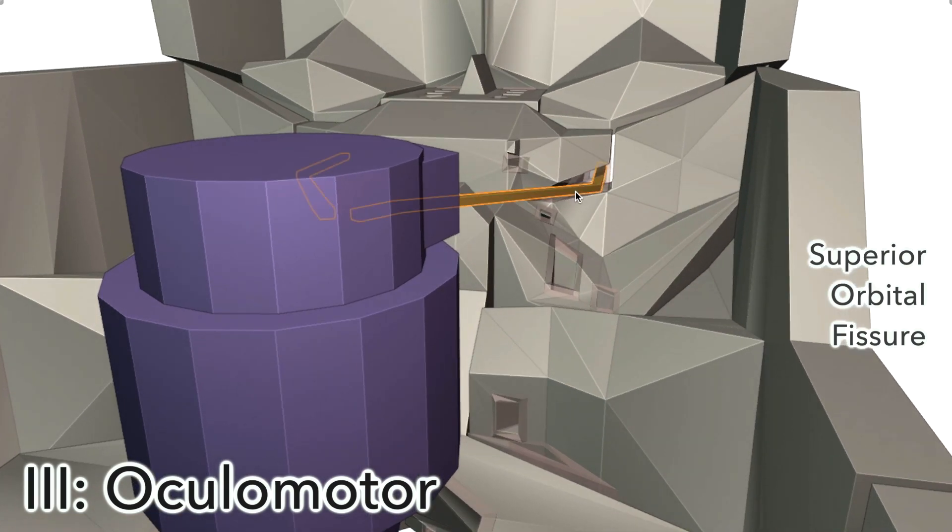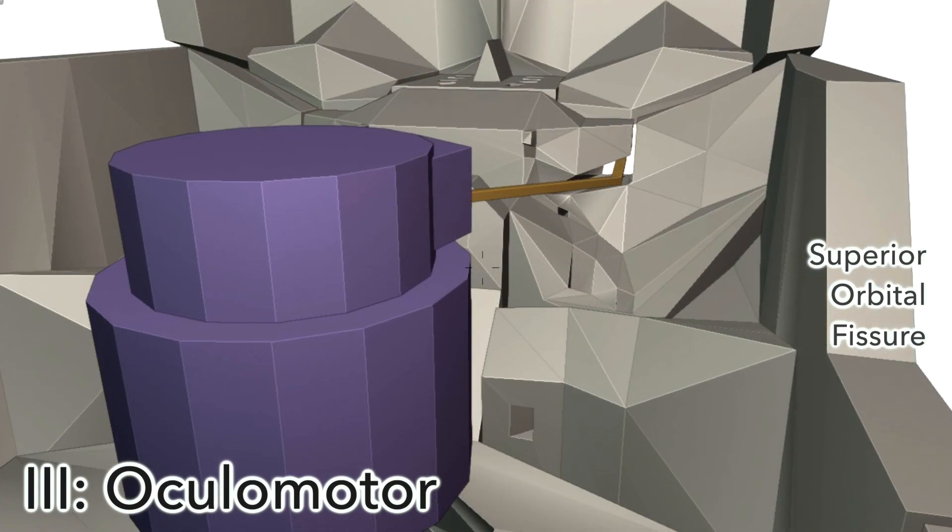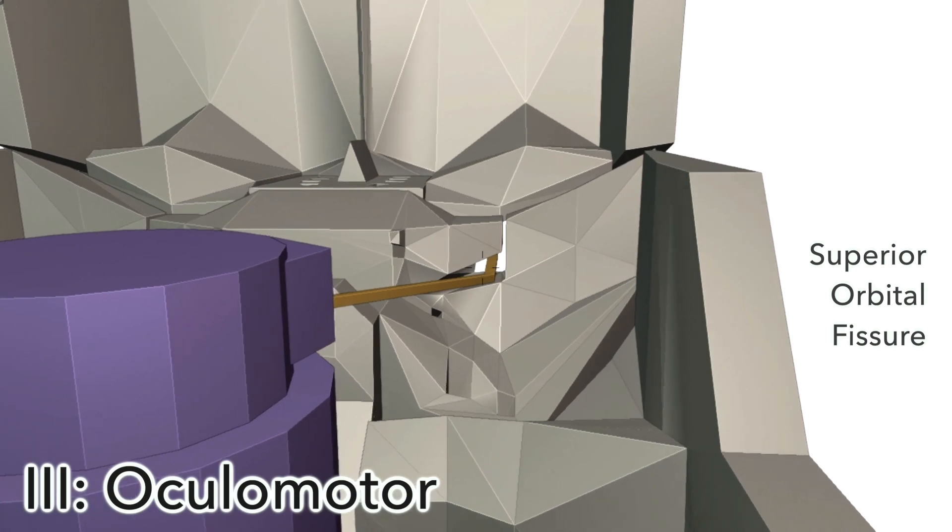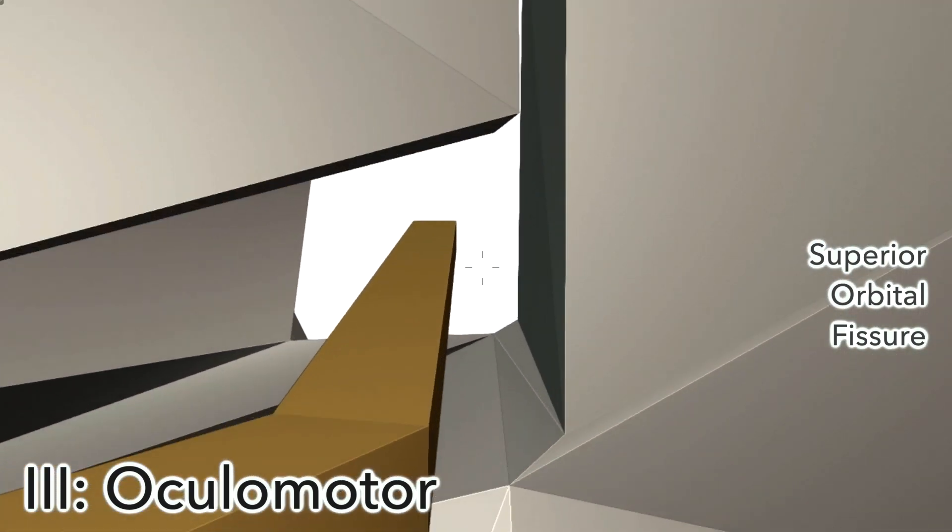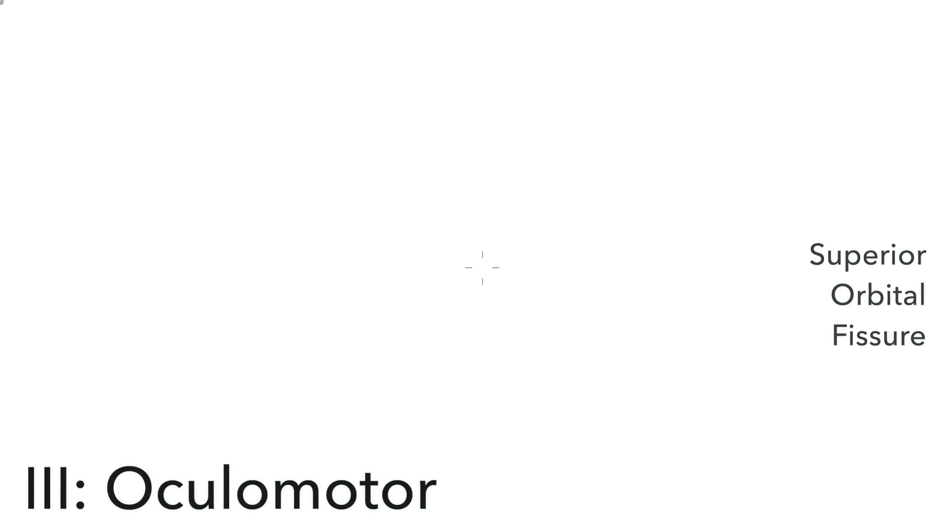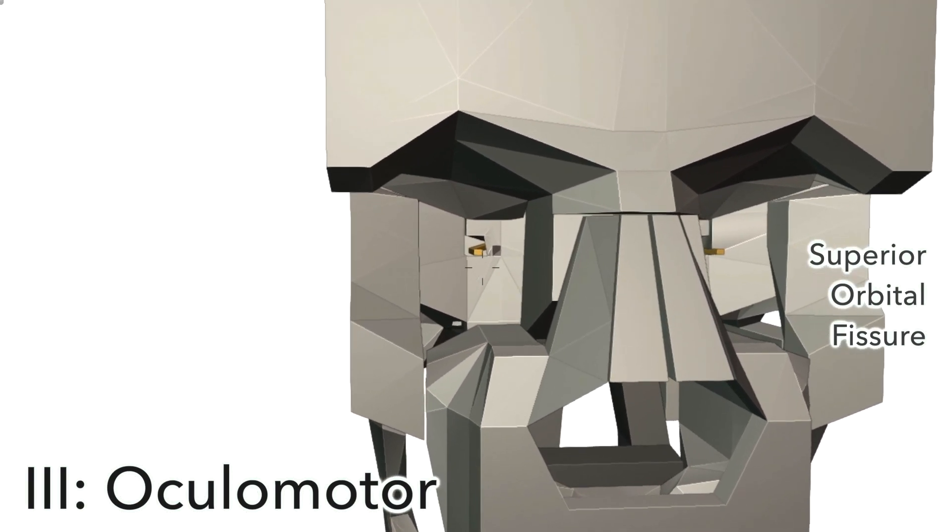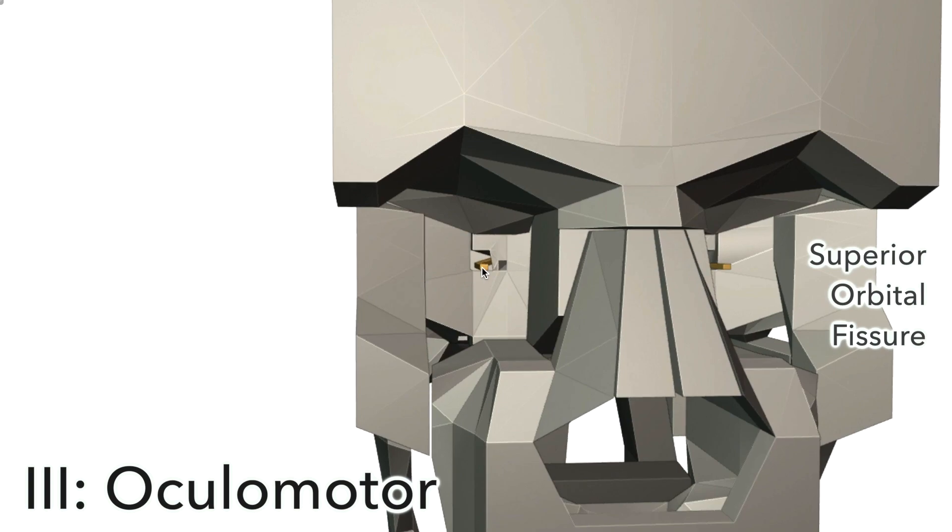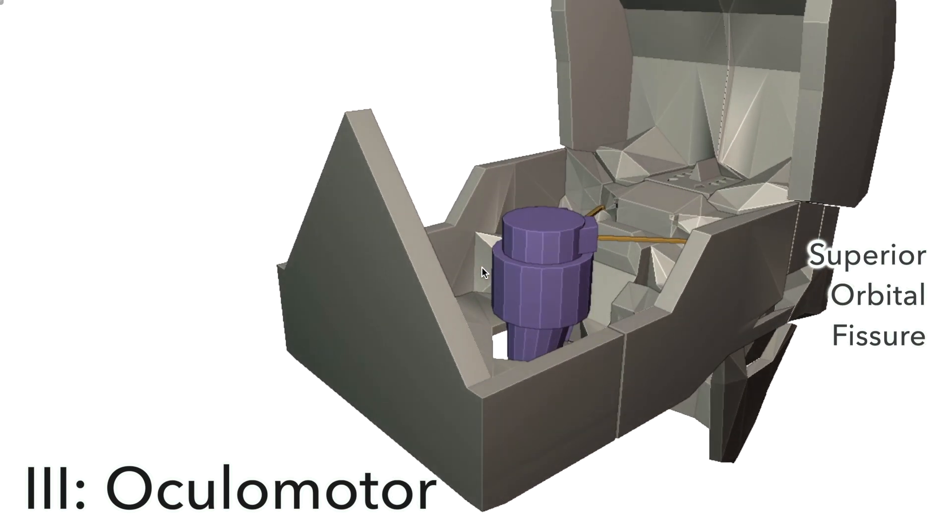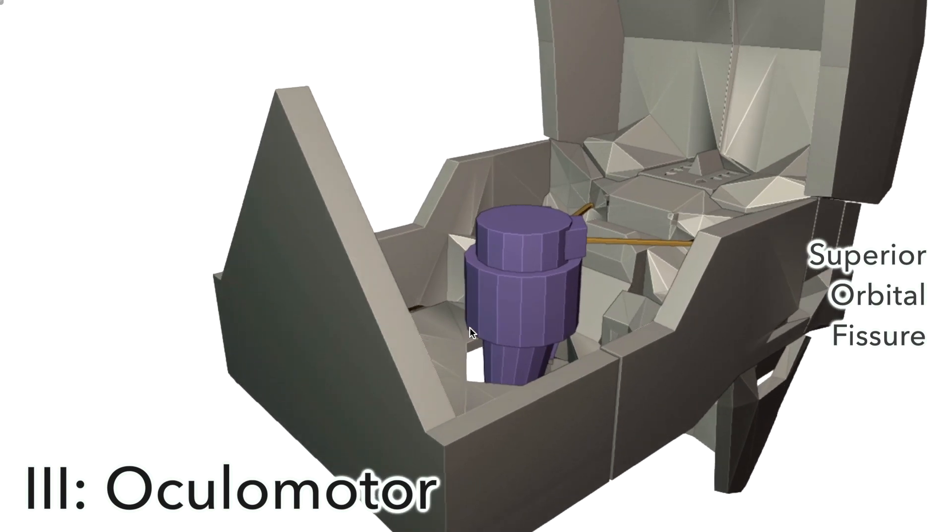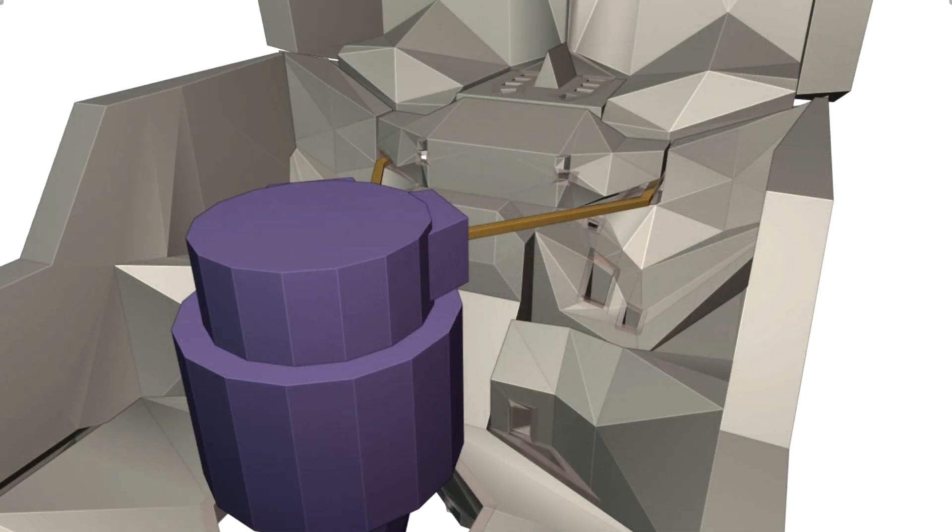It's also considered part of the sphenoid, but it's actually just a space that appears between the lesser and greater wings of the sphenoid. If we follow through to the orbit, we can see the oculomotor nerve coming out here. It controls all of the muscles that move the eye except for two, which we'll get to later on. The oculomotor nerve is also in charge of pupil dilation and constriction, which is an autonomic function.